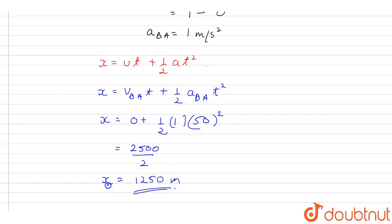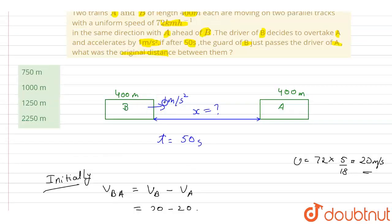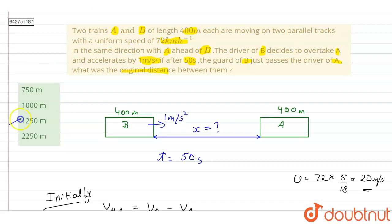So this will be the distance of separation between train B and train A. So the correct option will be option C.